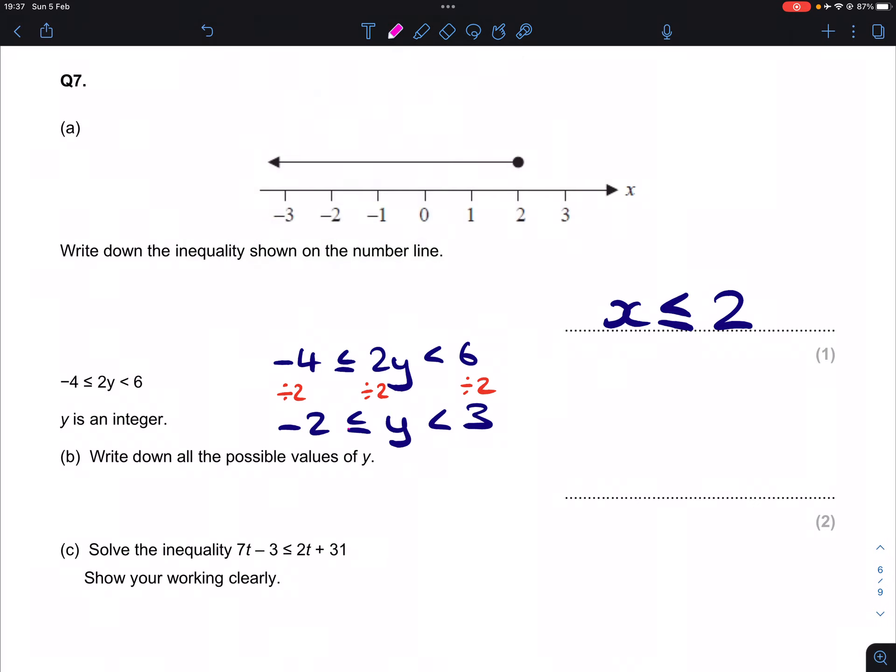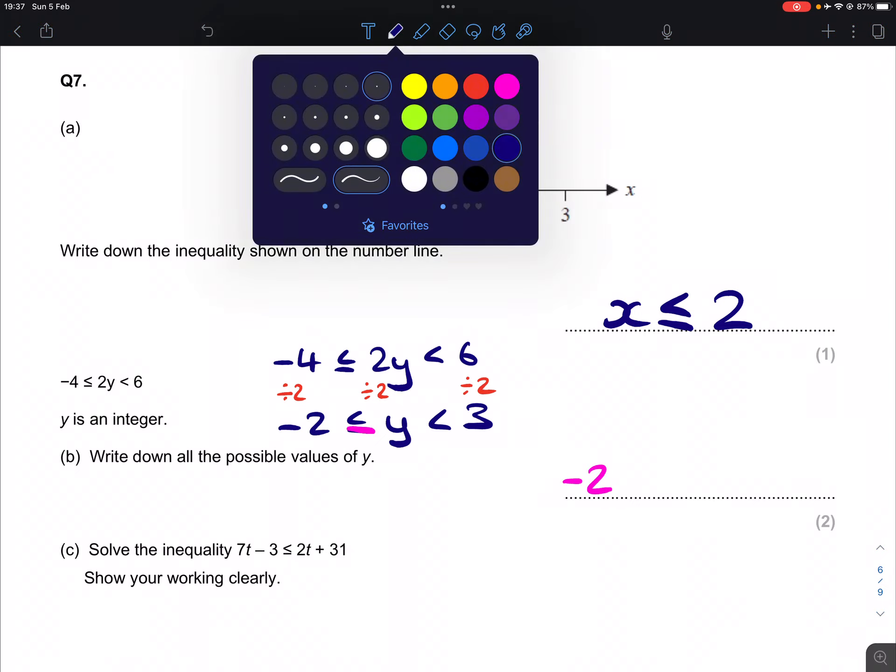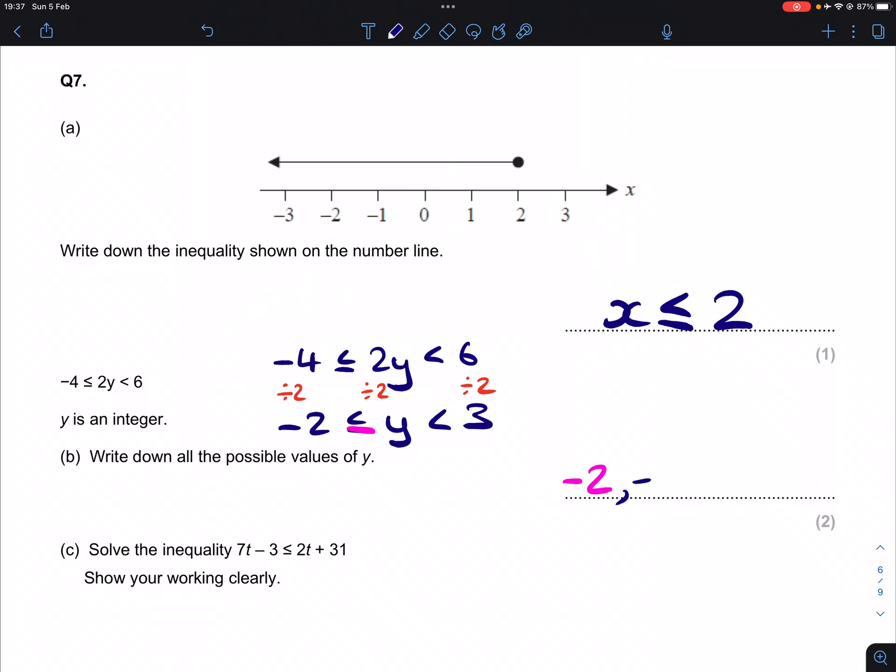Minus 2, by definition of this equal to, minus 2 is going to be included within this list of numbers. We're then looking at the integers that are bigger than it up until we get 3. However, this does not include 3, which means 3 is not on our list. So minus 2, minus 1, 0, 1, and 2 are our answers for that.